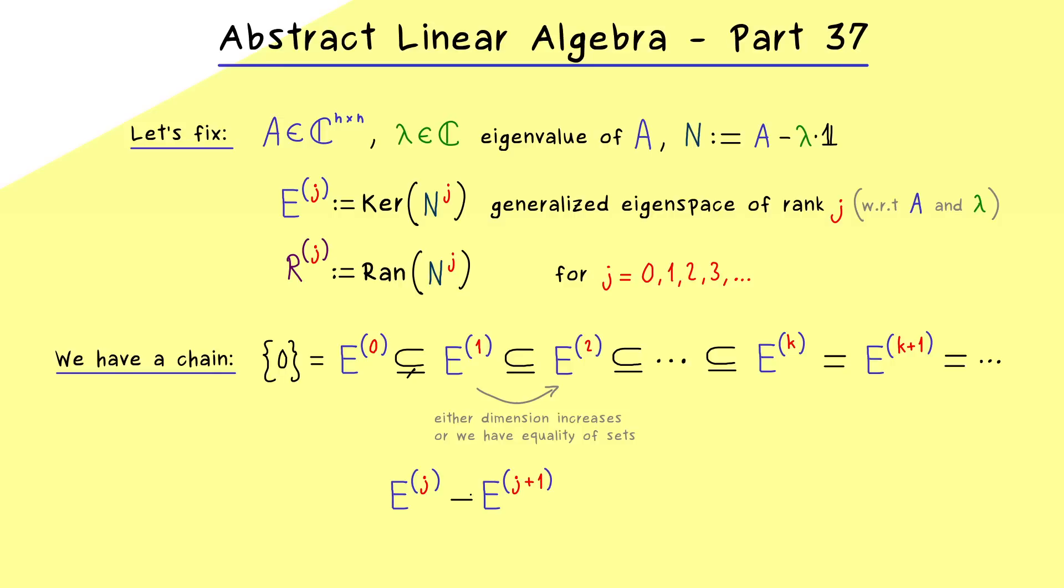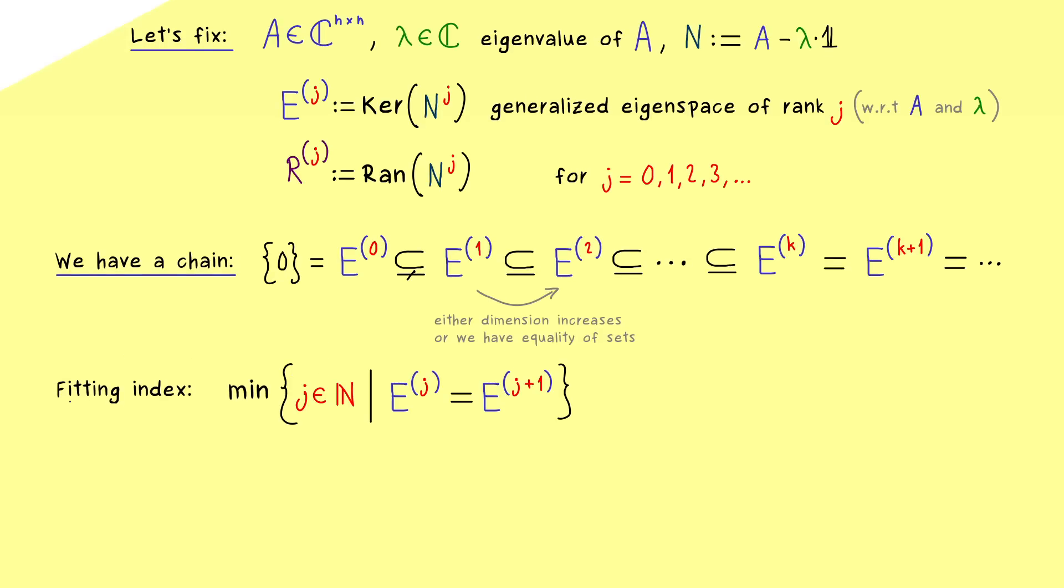Therefore, we could just look at all steps where no increase is happening. These are the indices j where E^j is equal to E^(j+1). Let's put these indices in a set and consider the minimum. In other words, this will be the first step in the chain where no increase in the dimension is happening. Exactly the index to this step is what we call the fitting index. In this video, I will just denote it by a lowercase d.